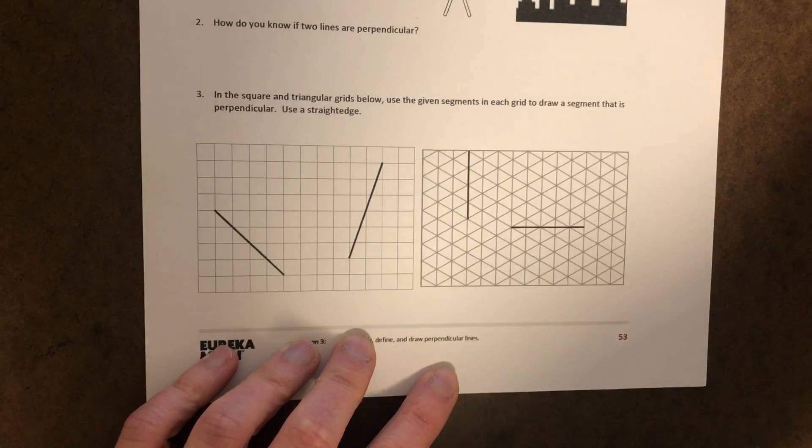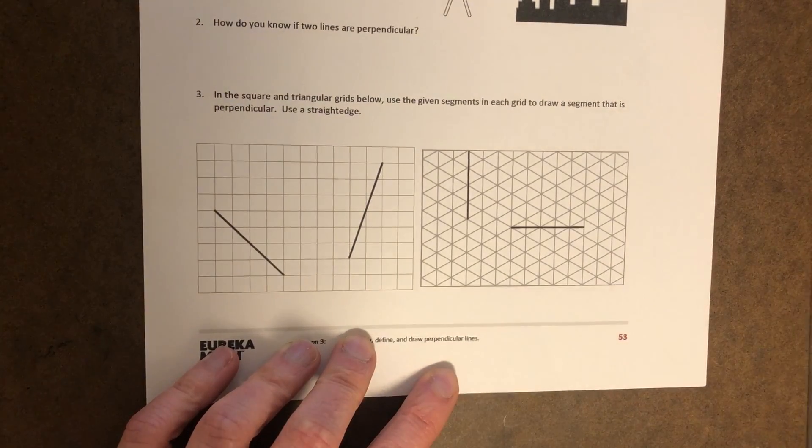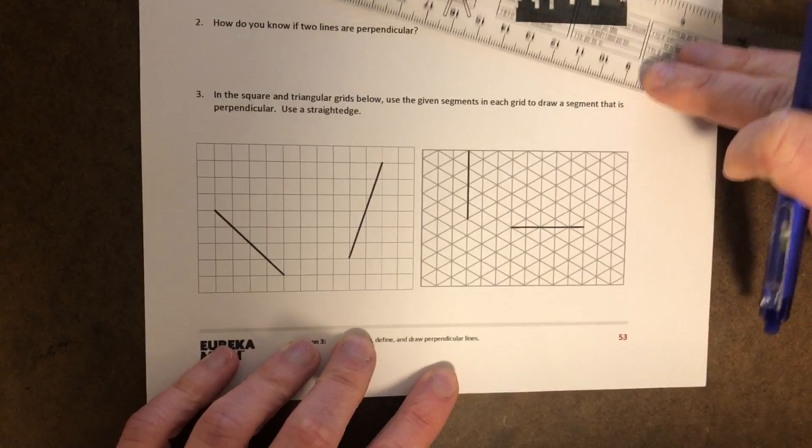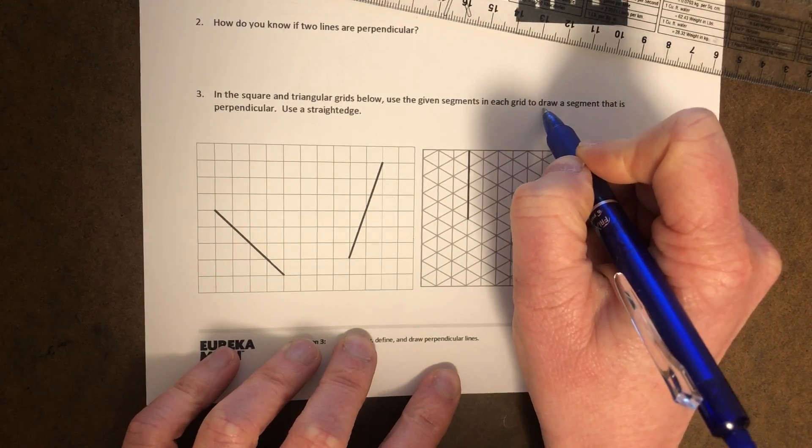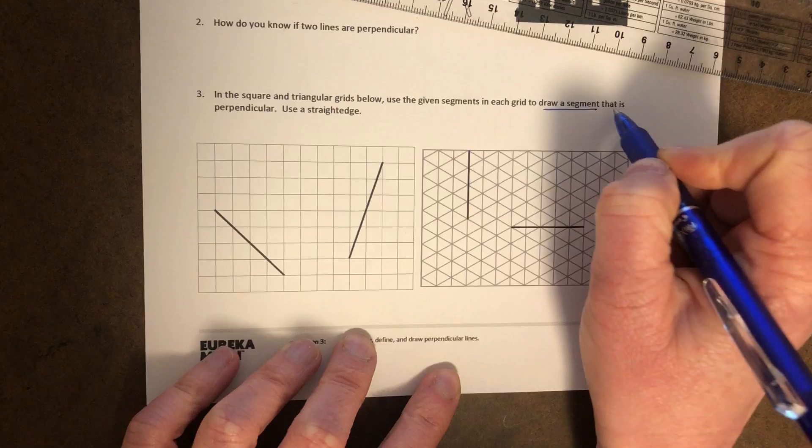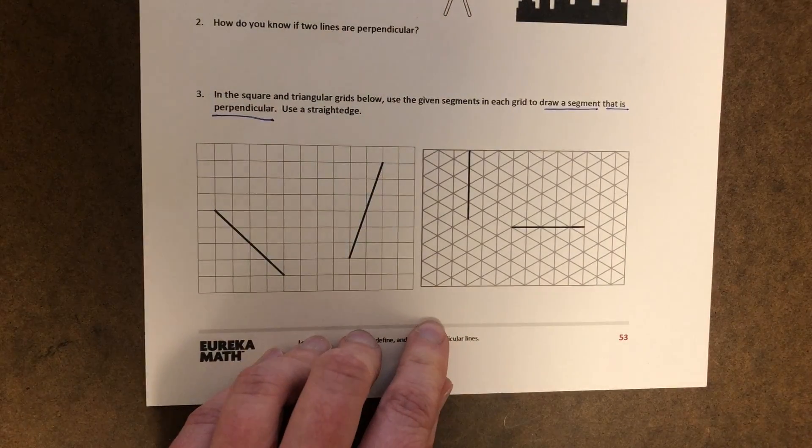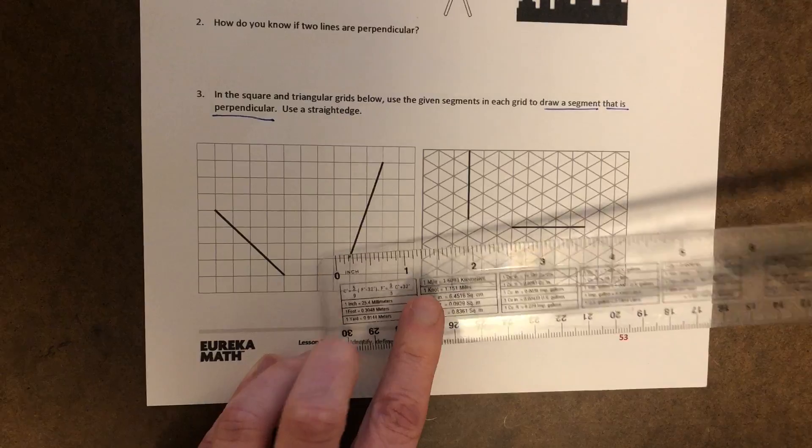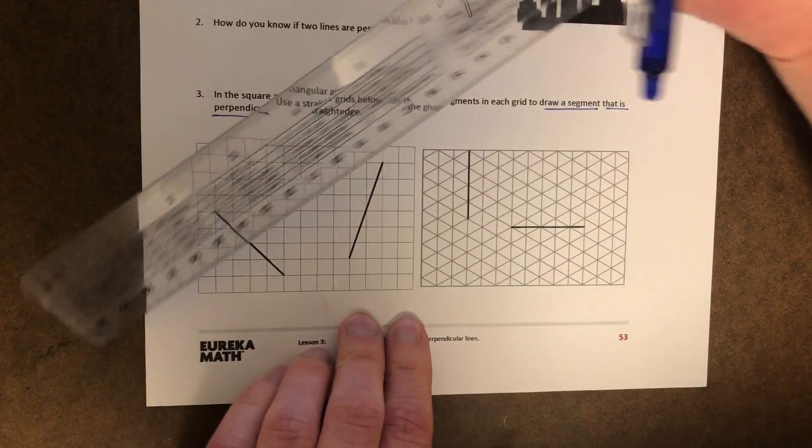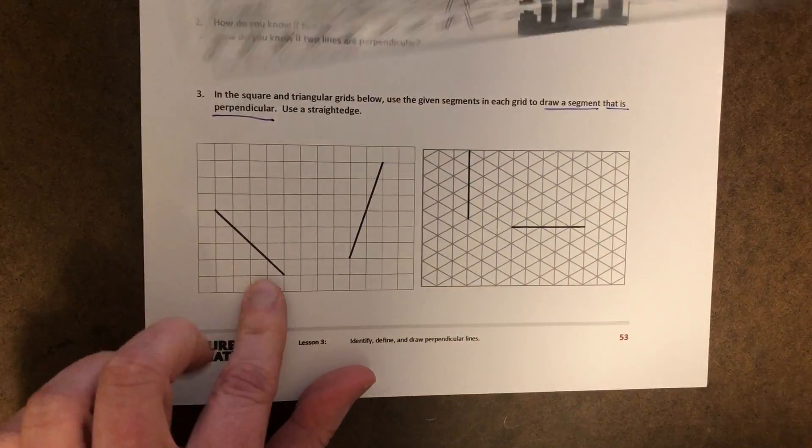It says to use a straight edge. So I have my ruler, my straight edge. What am I going to do? I'm going to draw a segment that is perpendicular. I know that perpendicular lines have to create a right angle, so this one is kind of diagonal.